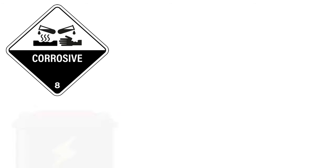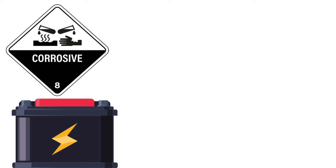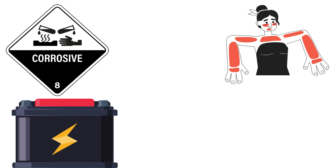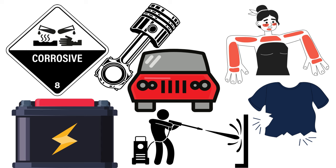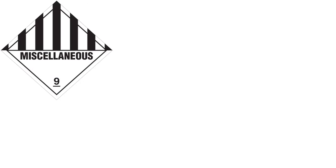Class 8 is Corrosive Substances — materials that can corrode or eat away at other materials. Battery acid and some cleaning products are examples. Battery acid is classified as Class 8 because it can damage skin, clothing, and even metal surfaces. Corrosive substances are common in industries such as manufacturing, automotive, and cleaning. Proper handling and storage are essential to prevent accidents and injuries.